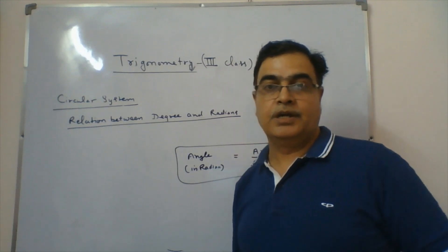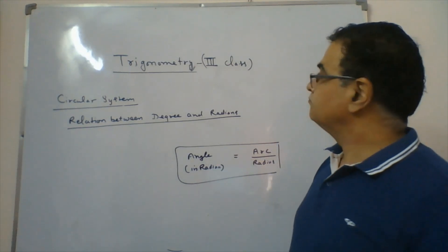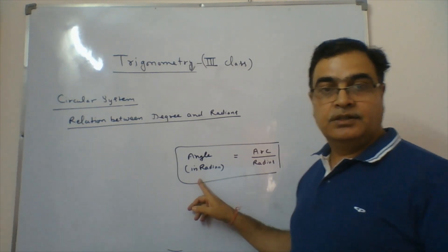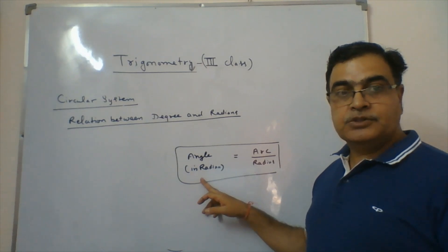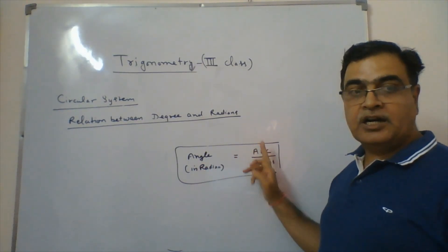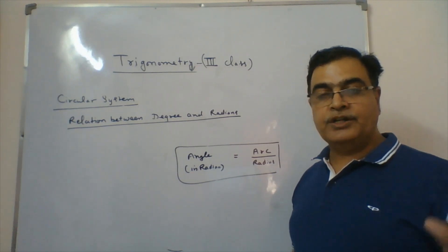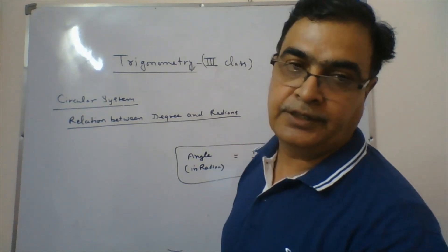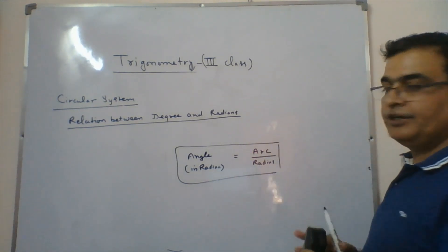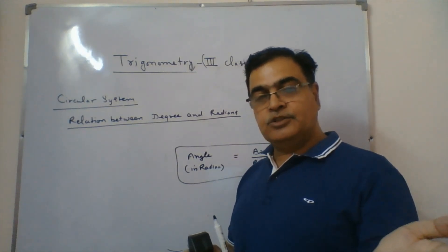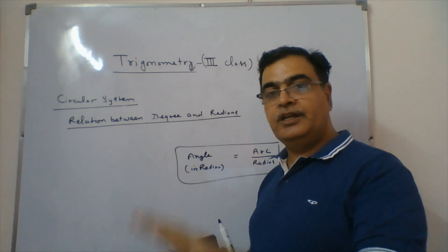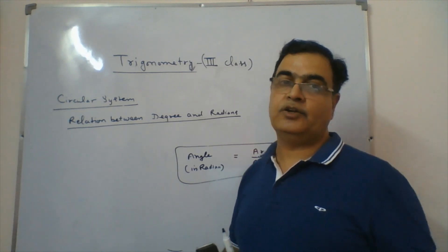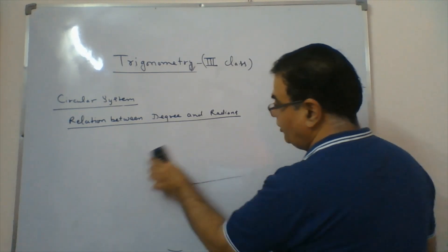We are now on trigonometry third class. Last time we derived that angle in radian equals arc length divided by radius. That result we have already done. Now I want to cover how we convert an angle in degrees to radians, and radians to degrees — the inter-conversion of radian to degree or degree to radian.